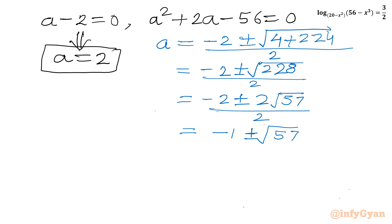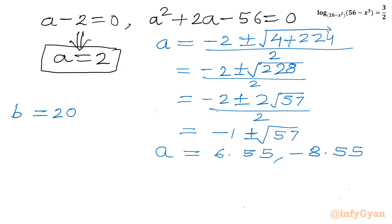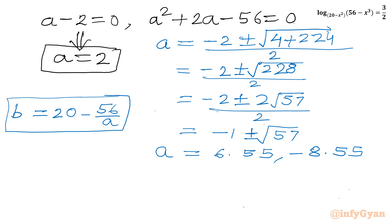For a ≈ 6.55, b = 20 - 56/6.55 ≈ 11.46. For a ≈ -8.55, b = 20 - 56/(-8.55) ≈ 26.54. Now using these as sum and product of x and y, we frame quadratic equations to find real solutions.